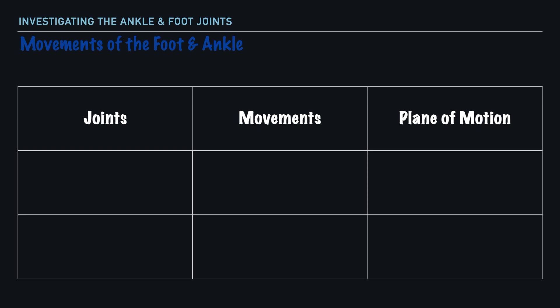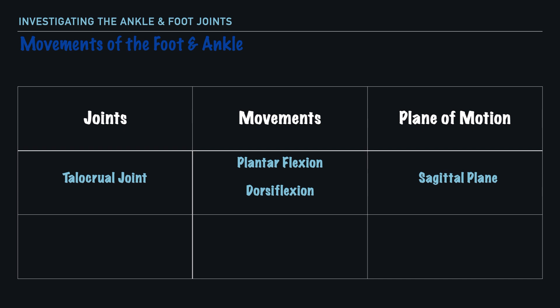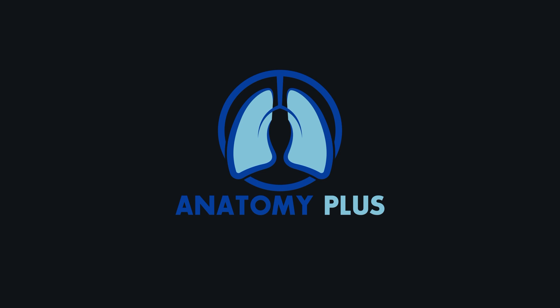Collectively, here are the movements of the foot and ankle. Specific to the talocrural joint, we have plantarflexion and dorsiflexion, which occur in the sagittal plane. For the subtalar joint, we have inversion and eversion, which are rotational movements occurring in the transverse plane. Thank you for watching this video — I hope it's been helpful. If you have any questions, please let me know in the comments section below, and I'll look forward to connecting with you again in the next video.